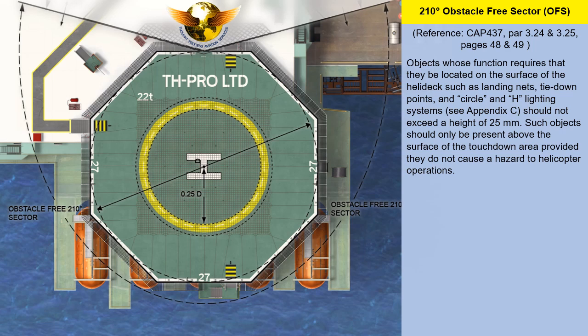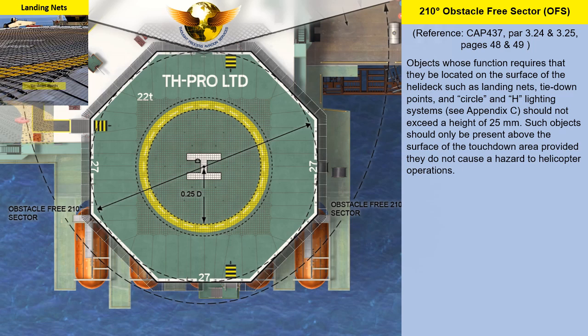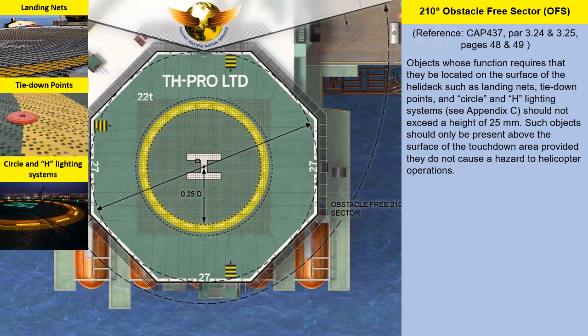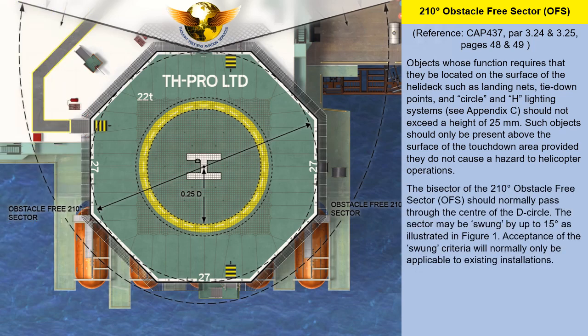Objects whose function requires that they be located on the surface of the helideck — such as landing nets, tie-down points, circle and H-lighting systems (see Appendix C) — should not exceed a height of 25 millimeters. The bi-sector of the 210-degree obstacle-free sector should normally pass through the center of the D-Circle. The sector may be swung by up to 15 degrees as illustrated in Figure 1.